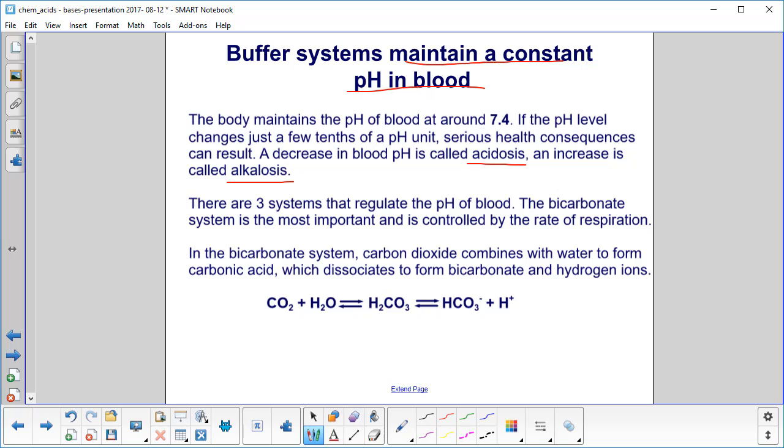There are three systems that regulate the pH of blood. The bicarbonate system is the most important and is controlled by the rate of respiration.